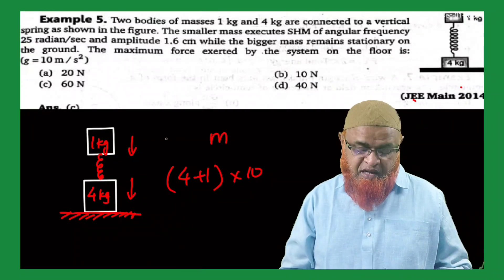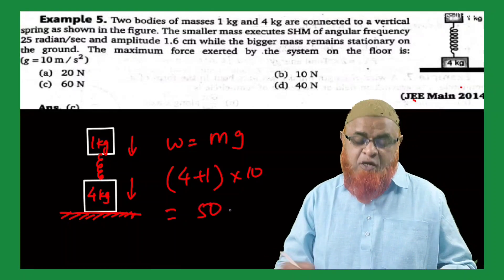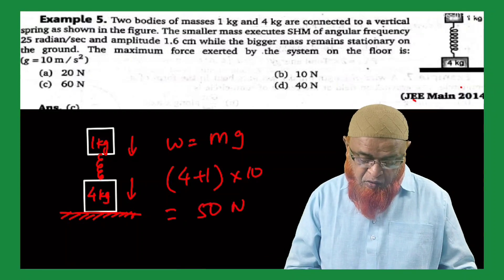I mean 10 newtons, because weight is nothing but mass into gravity. So 4 plus 1 into 10 is going to be 50 newtons.